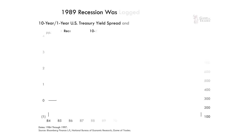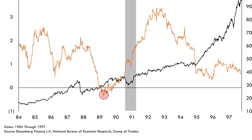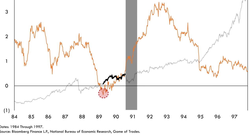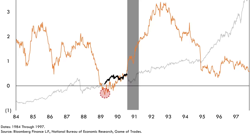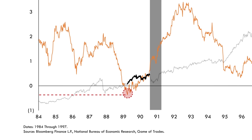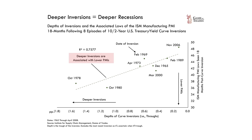In 1989, the yield curve inverted at the very beginning of the year and it took 12 months before the recession materialized. Throughout those 12 months, stocks rose quite significantly — the first example where stocks actually rise following the inversion. This recession was quite shallow. A key difference with today is that the 1989 inversion was very shallow, barely reaching negative 0.5% and only for a short period. We've found the depth of the inversion to be a big predictor of how deep the recession will be.